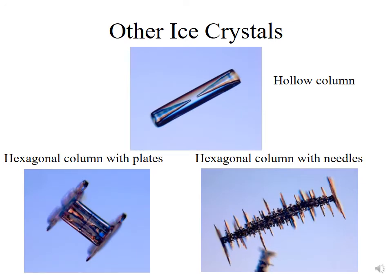There are other types of ice crystals. At the top we have a hollow column. In the bottom left — if you're a Star Wars fan, it could be seen as a TIE fighter — it's a hexagonal column in the center with plates attached to each end, called a capped column, which is fairly common. In the bottom right is a hexagonal column with needles growing off of it. Ice crystals interact with each other and can aggregate, eventually forming a snowflake composed of thousands of individual crystals. The old adage that no two snowflakes are the same is actually true, since each is composed of hundreds of thousands of individual ice crystals arranged differently.